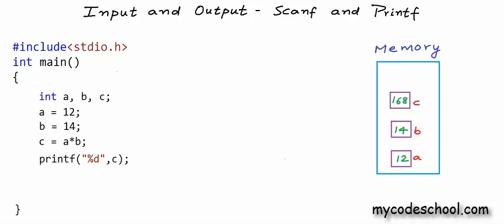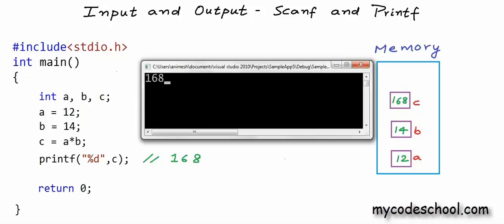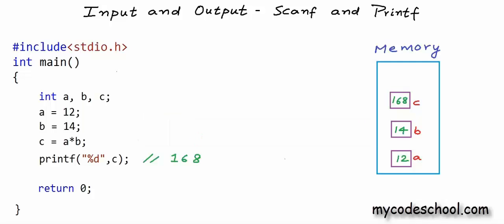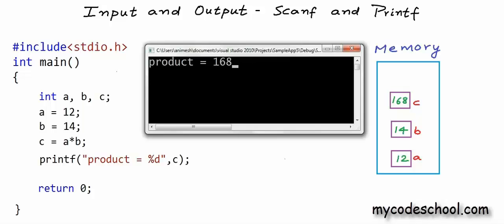So what is the output of this printf statement? In the string constant we only have a %d. This %d will be replaced by the value in c, and the value in c is 168, so 168 will be printed on screen. If I pass 'product = %d' as the first argument and pass c as the second argument, then the output would be 'product = 168'. Only the %d has been replaced with the value in c, and everything else in the string constant is printed as it is.